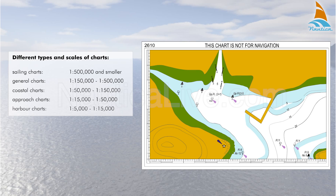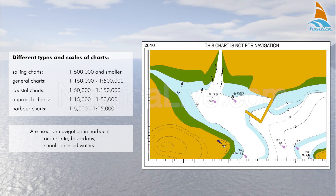Harbour charts, which have a scale of between 1 to 5,000 and 1 to 15,000, are used for navigation in harbours or intricate, hazardous, shoal-infested waters.